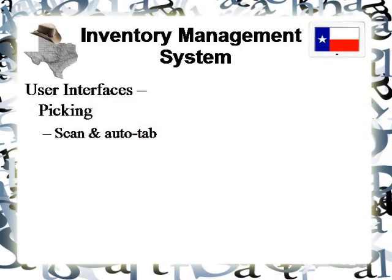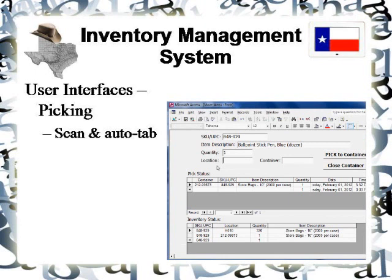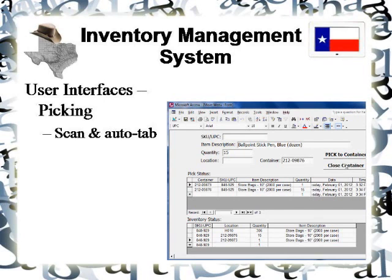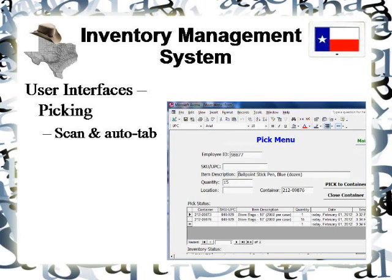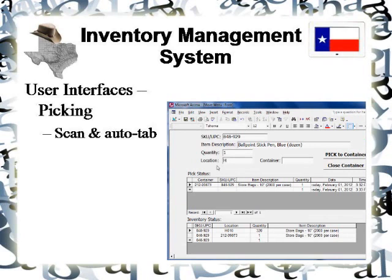Here's our live example, with a slight difference. As shown in the flowchart, the user scans the UPC, the description gets filled out, and since the assumption is that the quantity is 1, it AutoTabs directly to location. The user scans the location and it AutoTabs over to the container field, where they scan the container ID. Then they either pick the next container, scan the next UPC, or close the container to ship it out to the business unit or store. This is where your initial design begins — in the flowchart — and how it maps back to the actual user interface.